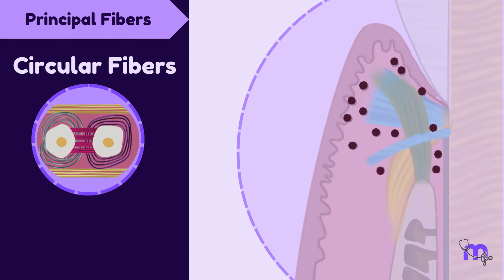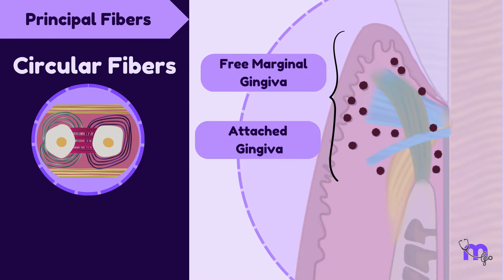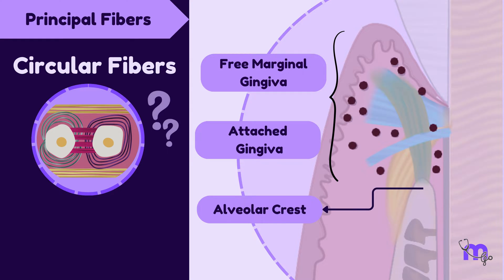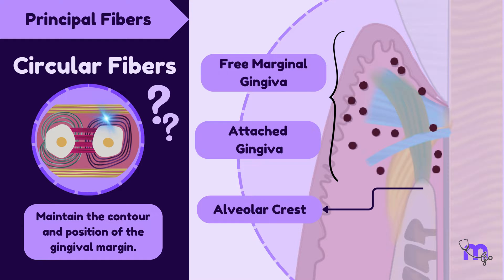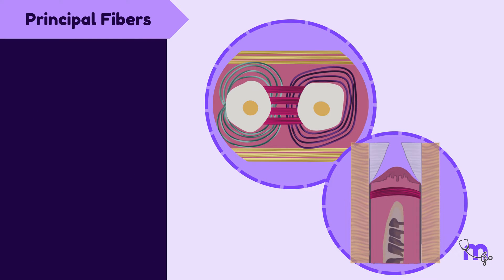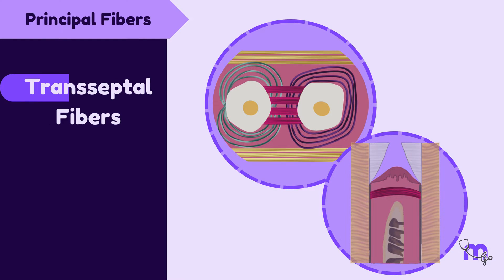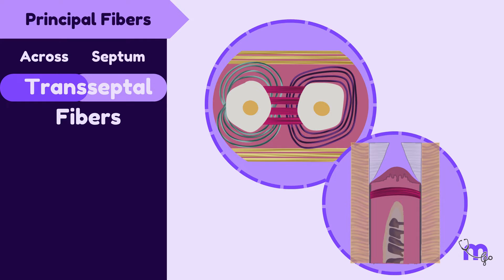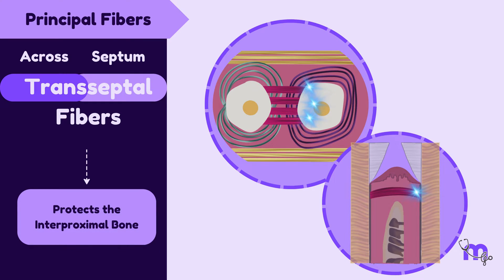Next, we have the circular group of fibres, present within the free marginal gingiva and the attached gingiva, but coronal to the alveolar crest. These fibres encircle each tooth to maintain the contour and position of the gingival margin. Lastly, we have the transseptal fibres — 'trans' meaning across and 'septa' referring to the septum — connecting the proximal surfaces of adjacent teeth. They start from the distal surface of one tooth and end at the mesial surface of the other, and protect the interproximal bone as they are located above the alveolar crest. That wraps up the principal group of fibres.